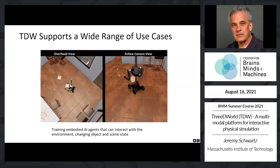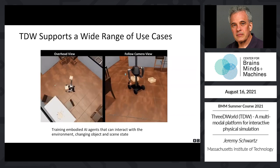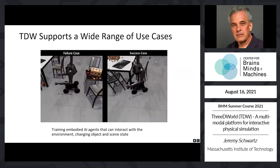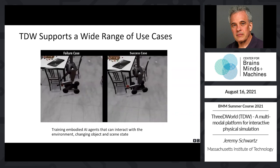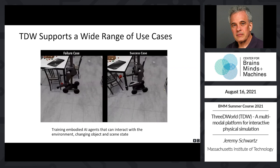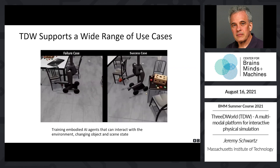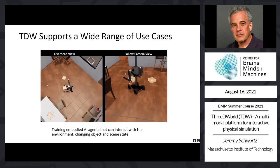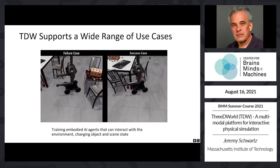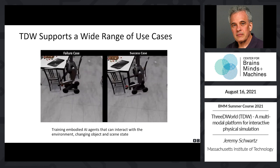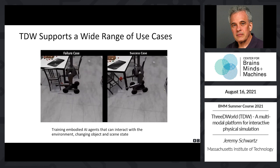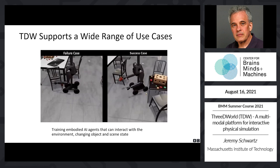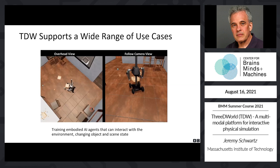Another key use case area for TDW, as shown in this third example, is embodied AI, where embodied agents are trained to interact with the environment and potentially change scene state. Here you see an agent performing part of a TAMP — task and motion planning — task involving the location and retrieval of target objects. We'll dig deeper into this area when we discuss physical interaction in TDW.